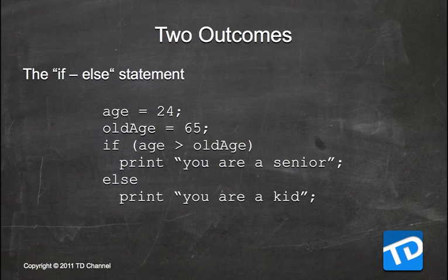There is another way to write the previous example. Instead of testing for things twice, if you know there are only two probable outcomes, you can use the if-else statement. Here: age equals 24, old_age equals 65. If age is greater than old_age, print 'you are a senior'; else, print 'you are a kid.' So in this example, you have one single test that can give you two different outcomes.